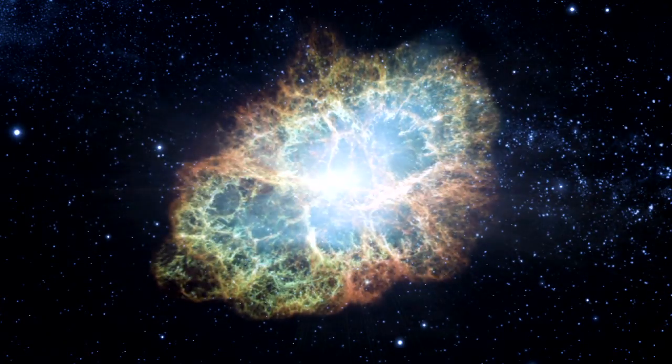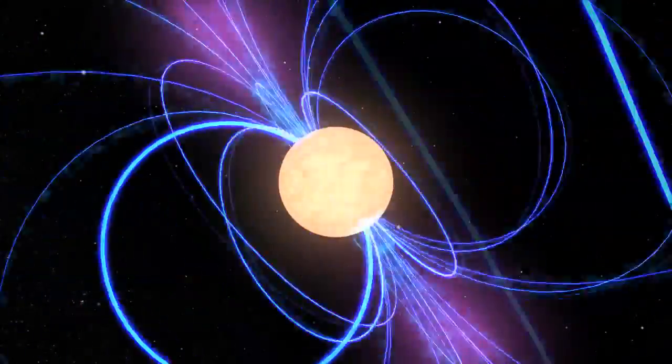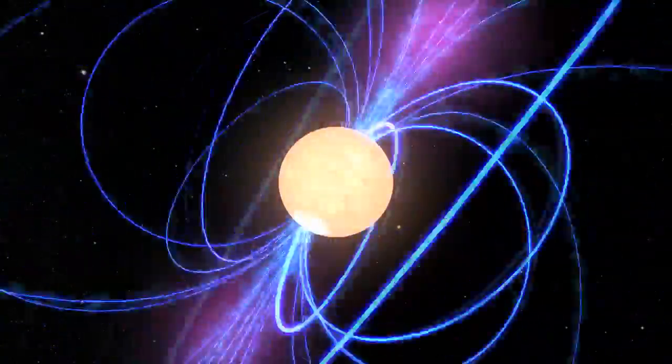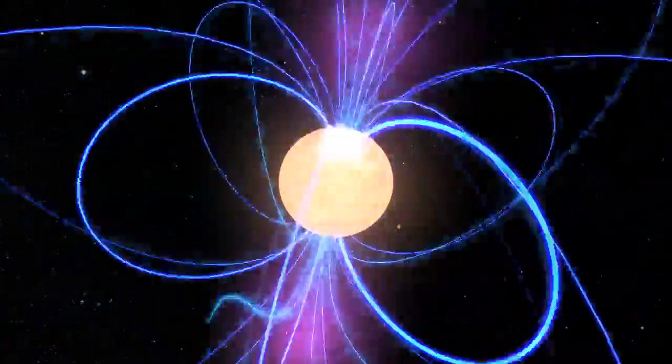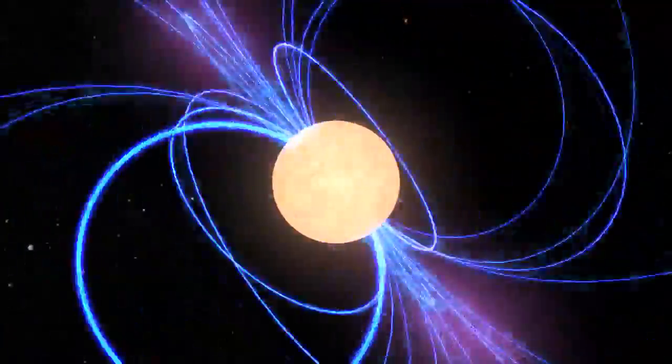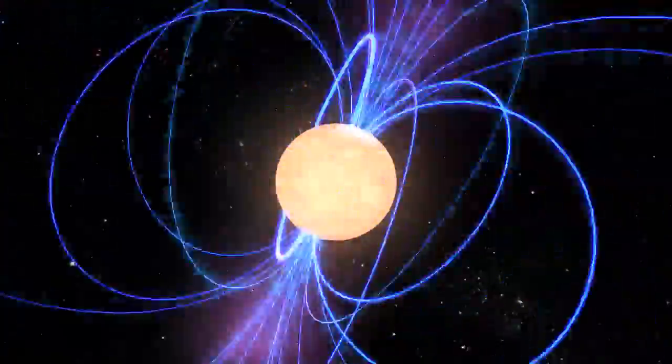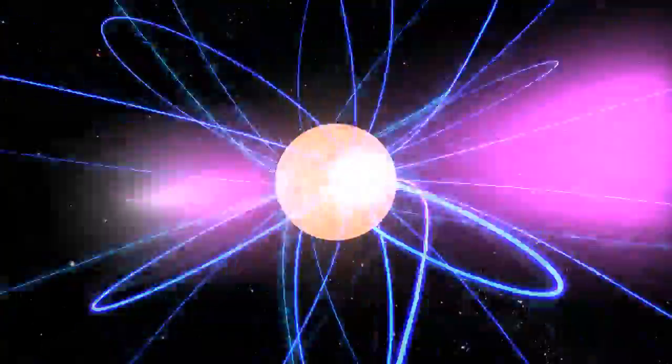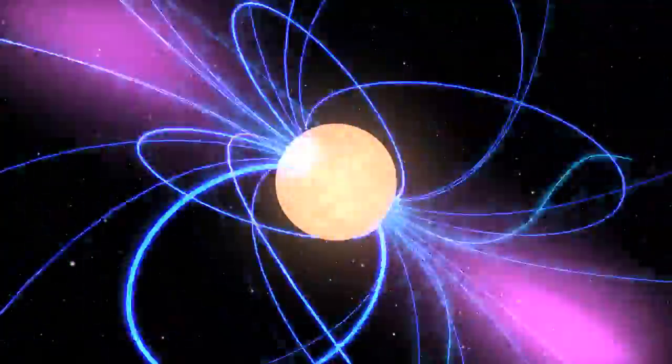The supernova left behind a magnetized neutron star, a pulsar. It's about the size of Washington, D.C., but it spins 30 times a second. Each rotation sweeps a lighthouse-like beam past us, creating a pulse of electromagnetic energy detectable across the spectrum.